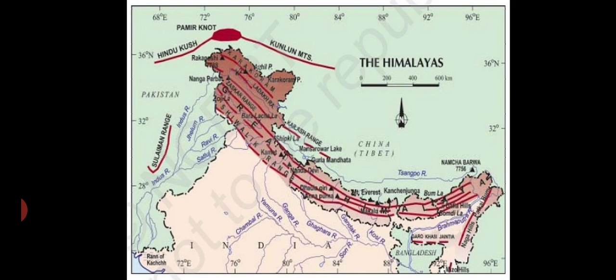That means the Himalayan range is expanded from Jammu Kashmir to Arunachal Pradesh. Look at the map very properly, then I am moving towards the next point of discussion.